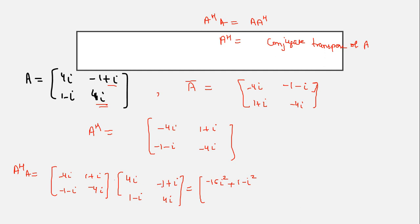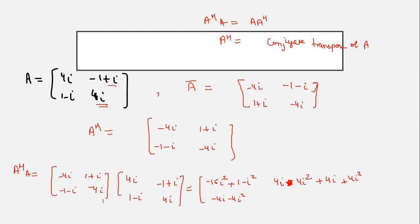Continuing first row, second column: minus 4 iota times this element, plus 1 plus iota times 4 iota gives 4 iota plus 4 iota squared. Then second row, first column: minus 4 iota squared, minus 4 iota, minus 4 iota squared. Then minus 4 iota. Let me redo this computation clearly.